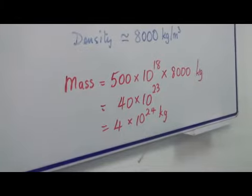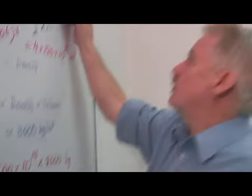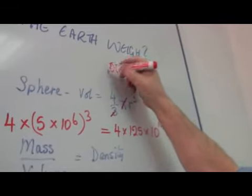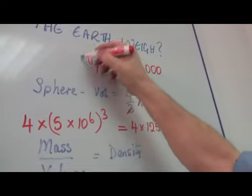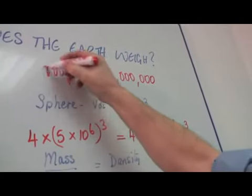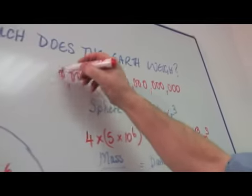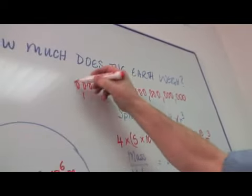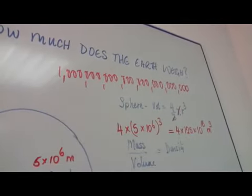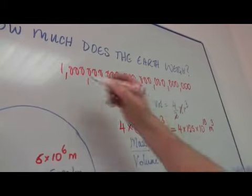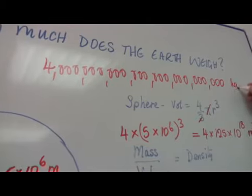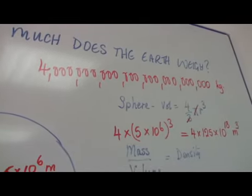OK. Now if we're going to draw 10 to the 24, well, we've got 3, 6, 9, 12. Well, that's 10 to the power 24. There you are. And it's 4. It's that number of kilograms is the mass of the Earth.